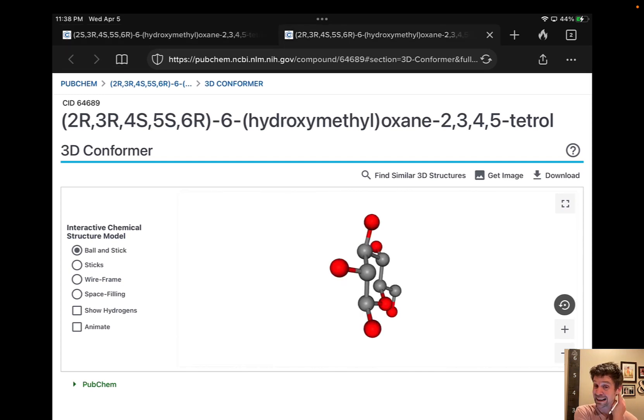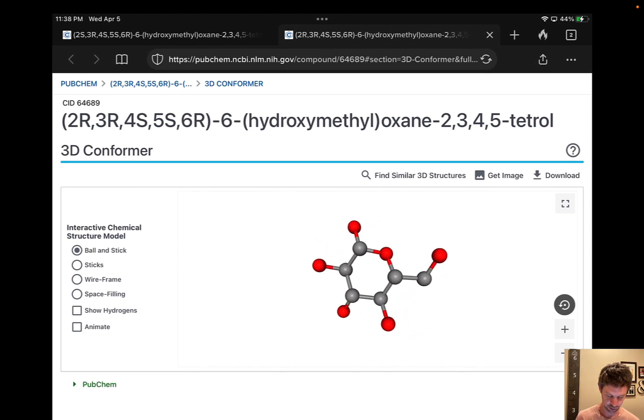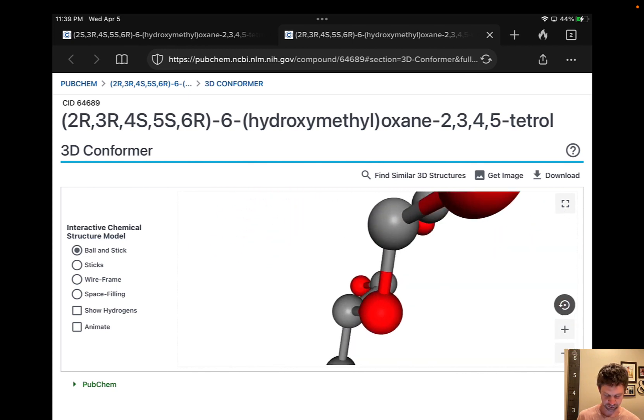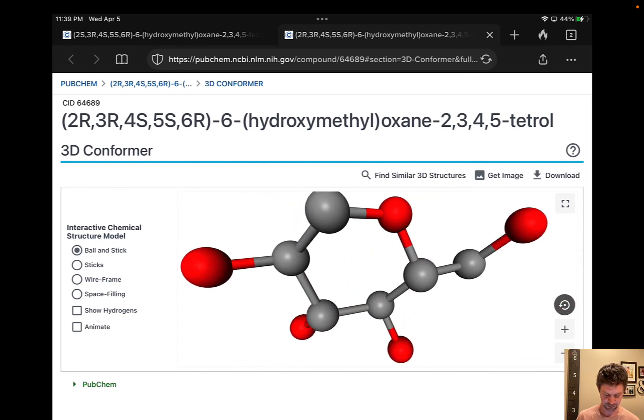Now let's look at the beta anomer. The beta anomer is still—this particular beta anomer is still a D sugar. And let's verify that really quickly by looking at carbon-5. So carbon-5 here is the carbon that's closest to the CH2. And I'm going to try to kind of jiggle this around to give us a Fischer projection viewpoint of carbon-5.